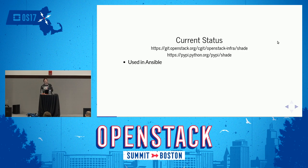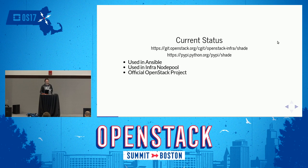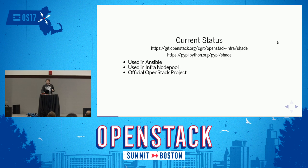Shade is used behind Ansible — if you use OpenStack from Ansible, you are using Shade. It's used in Infra's node pool, which is different from eBay's node pool, just as InfraZool is different from Netflix's Zool. We seem to have projects named the same thing as large Bay Area companies. It is used in Infra's node pool, which is why I can assert that it works at massive scale very well. It is now its own official OpenStack project. The Infra core still all have core on Shade and we will keep that.